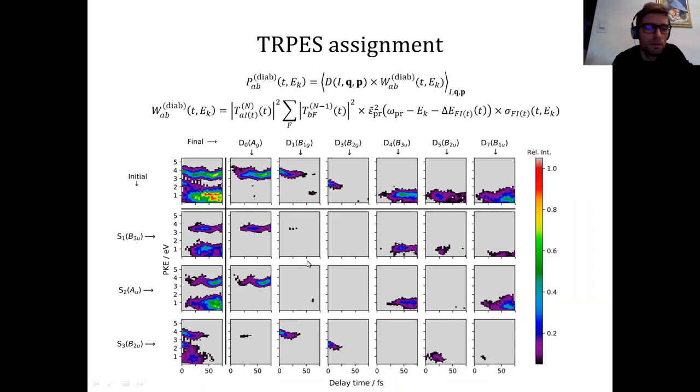In practice, it looks like this. So this is the doorway window simulation of TRPES of pyrazine, which breaks down to the components arising from ionization of three different states of neutral pyrazine. So we have B3U, AU and B2U states. We can also decompose it according to the character of the final cationic state, and we can decompose it according to both. So we get a sort of matrix of spectral components. And now we immediately know that, for example, this band here at approximately four electron volts of kinetic energy, that in the early times, it originates from the ionization of B2U pi-pi star state, but in the later times, it originates from ionization of these two n-pi star states, B3U and AU.